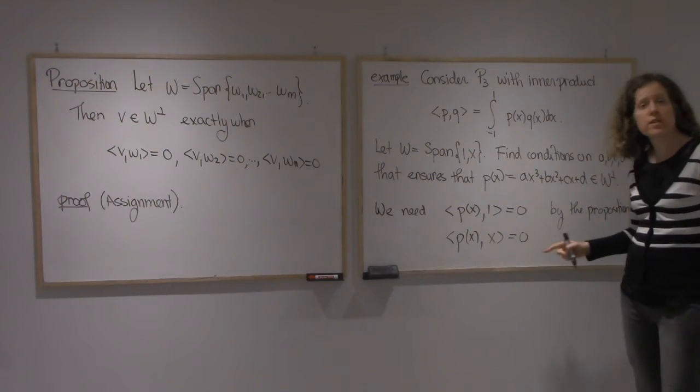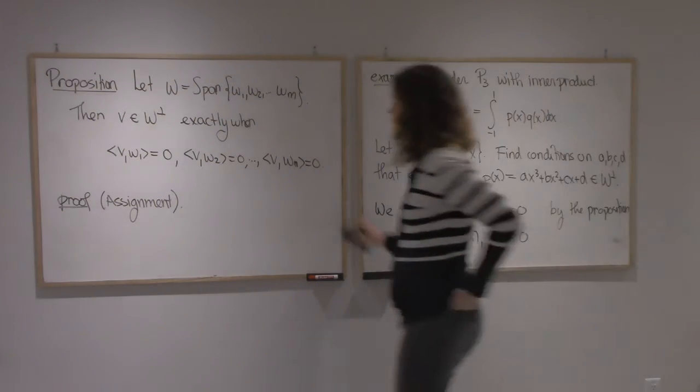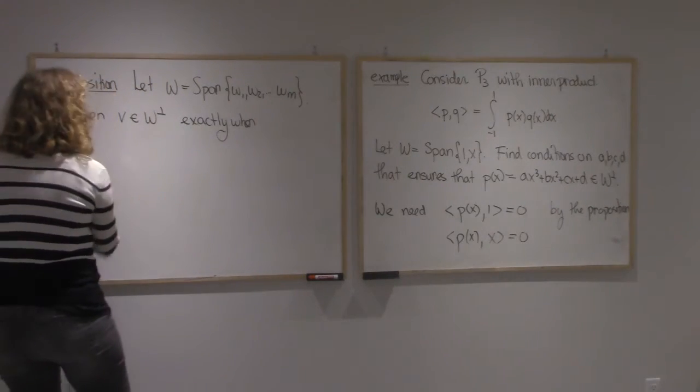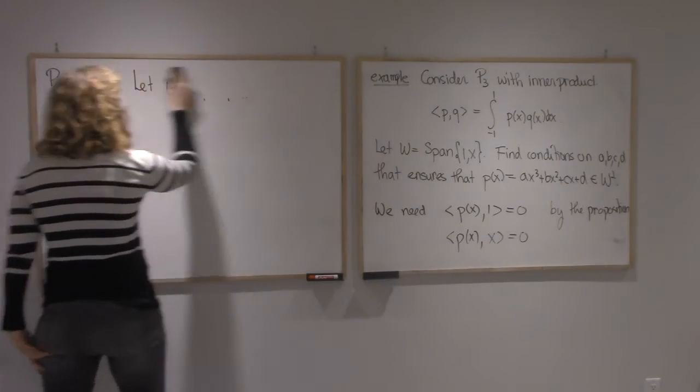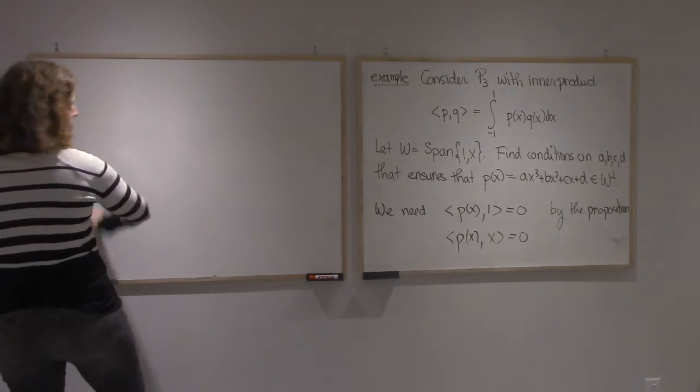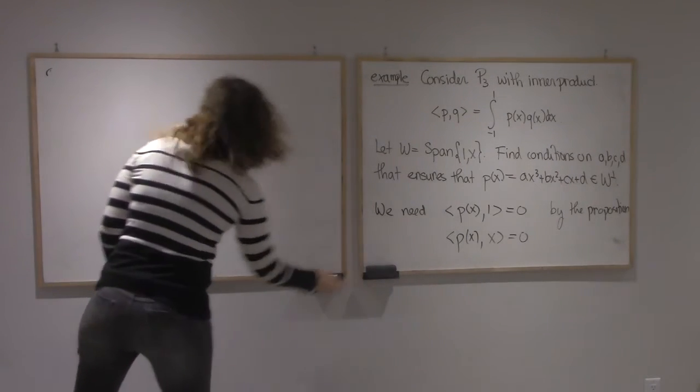So each one of these conditions is going to give you an equation in A, B, C, D that must be 0. So let's find the first one and let's find the second one, and the two together will give you an answer.